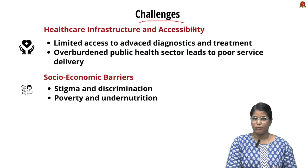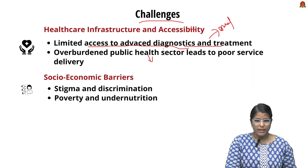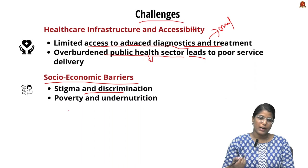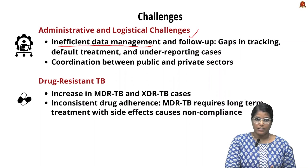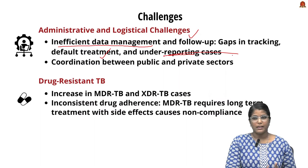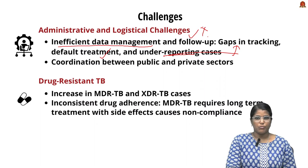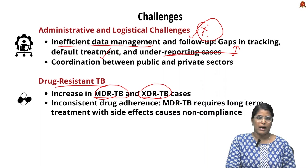There are certain challenges to overcome. First, there is limited access to advanced diagnosis and treatment, especially in rural areas, and an overburdened public health sector in urban areas leading to poor service delivery. There is also stigma and discrimination when a person is infected with TB, and socioeconomic barriers that hinder recovery. Additionally, there is inefficient data management and follow-ups — gaps in tracking, default treatment, and under-reporting of cases.